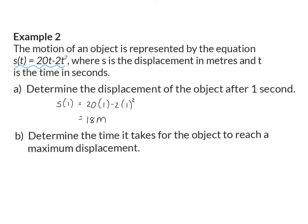Question B: Determine the time it takes for the object to reach a maximum displacement. We need to determine t for maximum displacement. For any maximum value, we take the derivative and set it equal to zero. We also know the first derivative calculates velocity, and here the velocity will be zero — this is the moment the object is standing still before returning to its original position. Solving for t, the maximum displacement happens after five seconds.